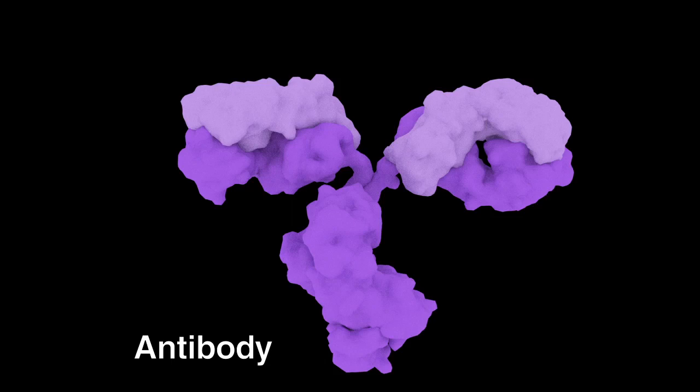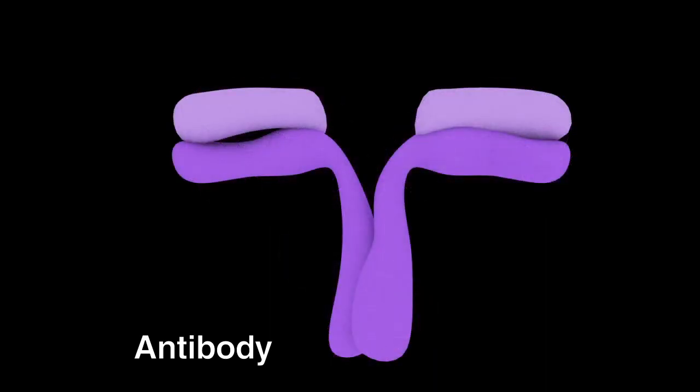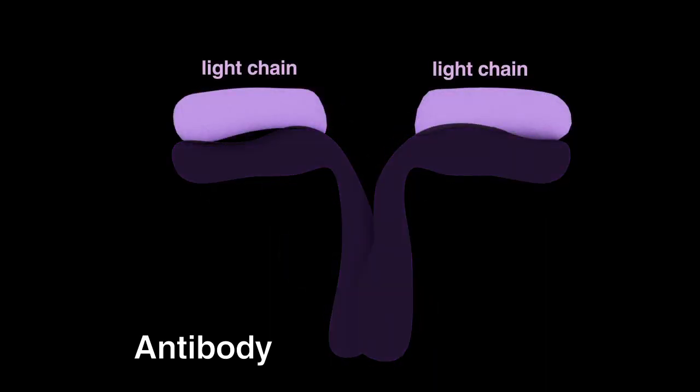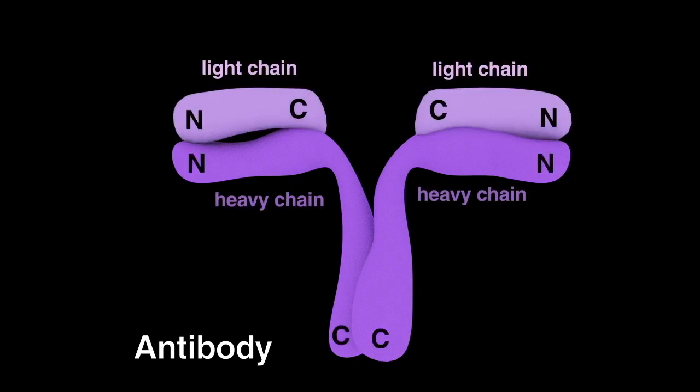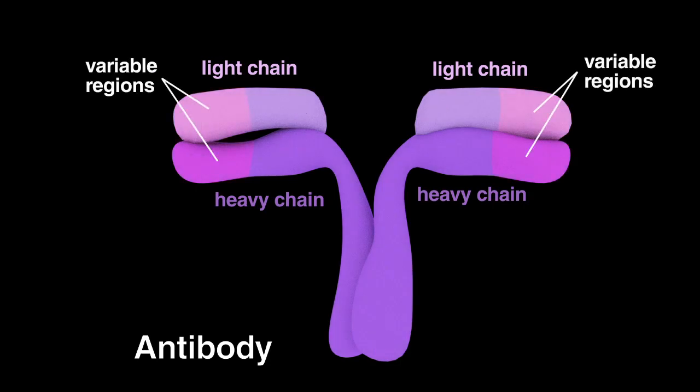Antibodies are Y-shaped proteins and are made up of four polypeptides or protein chains: two identical shorter chains called light chains, and two identical longer chains called heavy chains. The N-terminus of the four polypeptide chains vary significantly in sequence from one antibody to the next, and are called variable regions.